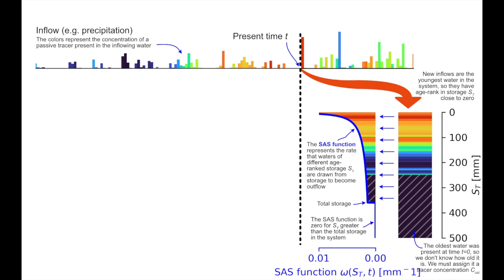If we know the total storage in the system, we know that no water can be drawn from any point below that total storage in the age rank storage column. Therefore, the SAS function must be zero below that point. We don't always know the total storage though, and luckily there are ways to use SAS functions where you don't have that information.